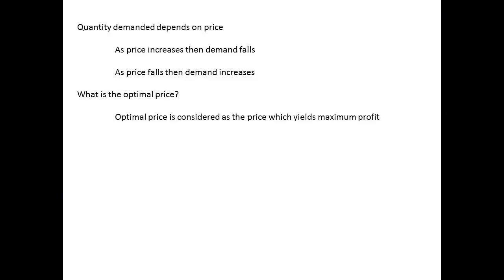Economics puts forward a theory that the quantity of any good that is demanded is related to the price of the good. The higher the price, then the less the demand, and the lower the price, the greater the demand becomes. How then can we determine an optimal price? And what do we mean by an optimal price? In economics, an optimal price is considered to be that which will produce the sales revenue that yields maximum profit.